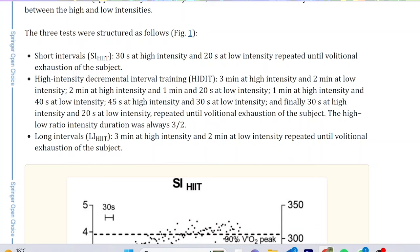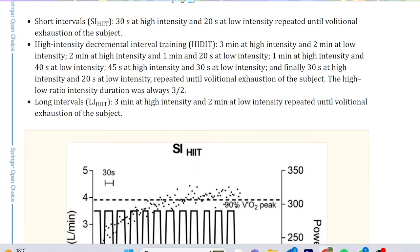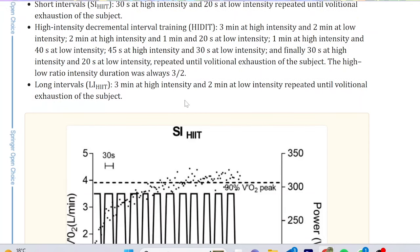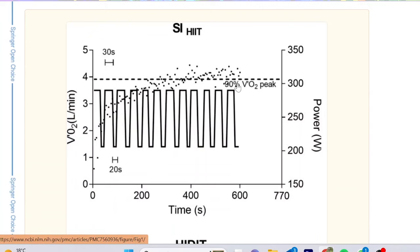The 30-20s were done like that. The new interval they were testing is 3 minutes high intensity, 2 minutes low intensity, 2 minutes high, 1 minute 20, and it's always a 3:2 ratio and just goes down. This is repeated until volitional exhaustion, so you do one set, rest, and see how many times you can do it. The other one is 3 minutes on, 2 minutes off, which is pretty classic.